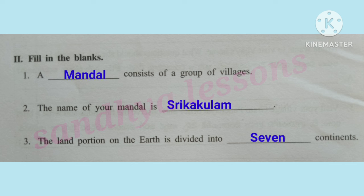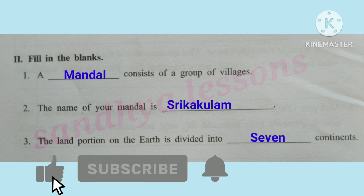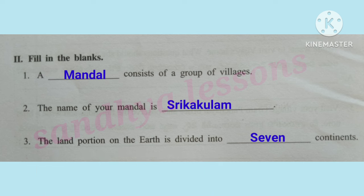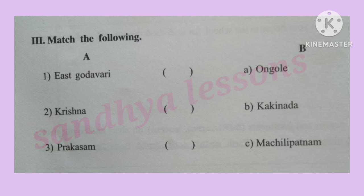Fill in the blanks: A mandal consists of a group of villages. The name of your mandal is Srikakulam. The land portion on the earth is divided into 7 continents. Match the following — East Godavari: Kakinada, Krishna: Machlipatnam, Prakasam: Ongol.